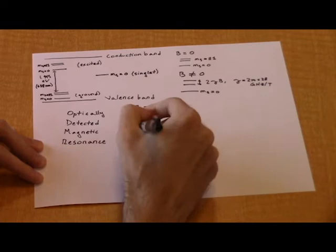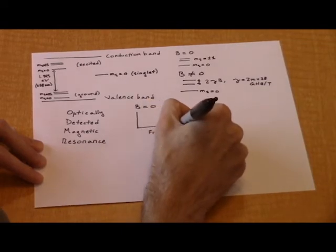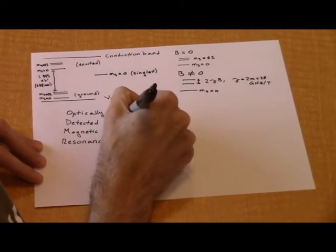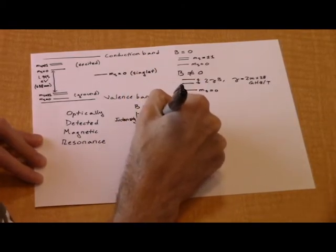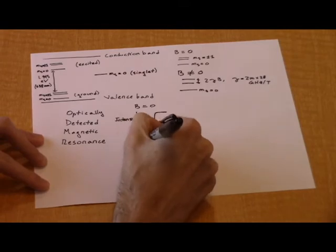When the microwave frequency is resonant with the energy difference between the zero and plus minus 1 sublevels, electrons will be excited from the zero sublevel to the plus minus 1 sublevel, which produces an optically detectable dip in fluorescence intensity.